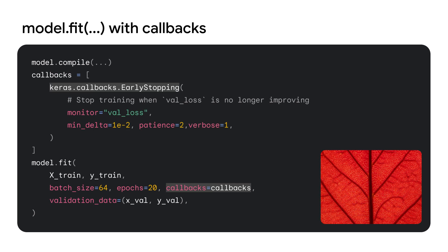In the next level of complexity, we can customize the training loop using callbacks. We compile the model like before, but this time, when calling Model.fit, we pass in the early stopping callback to halt training if the validation loss stops improving.